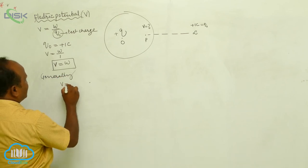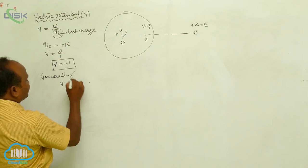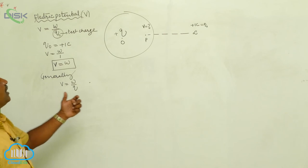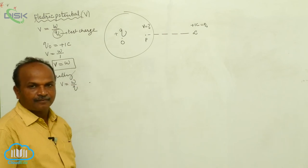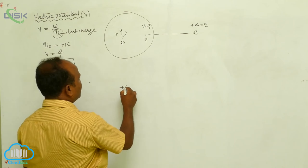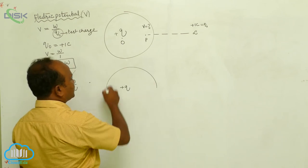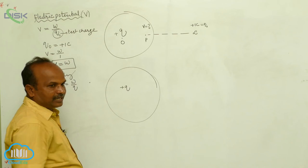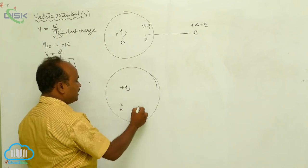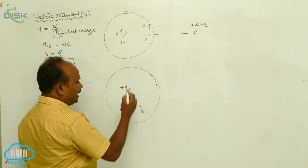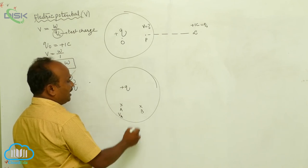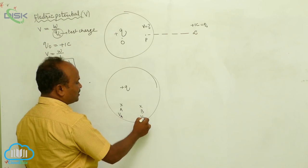The electric potential formula is generally written as V = W/Q, where Q is the test charge. Now, what is the potential difference? Let us consider there is a point A and a point B within the electric field. At point A, the potential is V_A, and at point B, the potential is V_B.